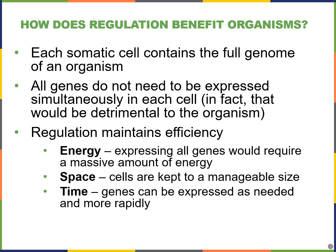Previously we learned that every body cell, or somatic cell, in an organism contains the full genome of the organism. In humans, for example, we have 46 chromosomes and all of those genes in those chromosomes are present in every body cell — my skin cells, cells of my eye, etc.